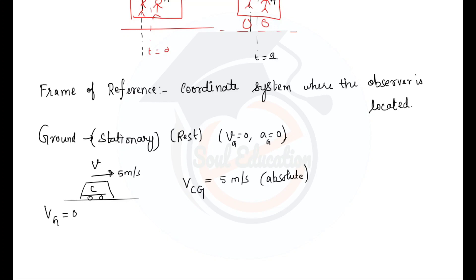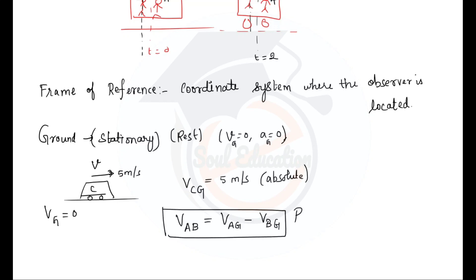The actual definition of relative motion: the velocity of any object A with respect to another object B is equal to velocity of A minus velocity of B. When we say velocity of A and velocity of B, these are the absolute velocities — velocity of A with respect to the ground minus velocity of B with respect to the ground. This is the definition of relative velocity.